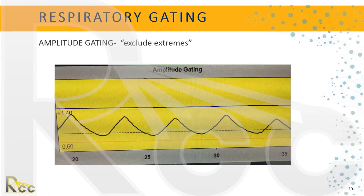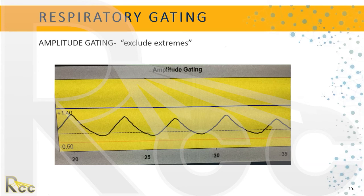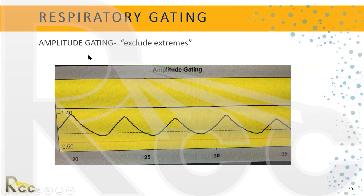An extreme example is free breathing with a very wide threshold — we're still using gating but aren't particularly concerned about inspiration or expiration amplitude. However, we do want the beam to turn off if the patient coughs, yawns, or does anything that causes an extreme change in breathing. Without gating, if a patient coughs at the LINAC, we usually don't have time to hit the off button. The gating software turns the beam off for us automatically.